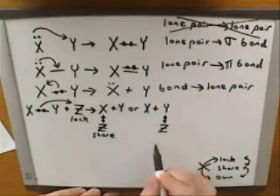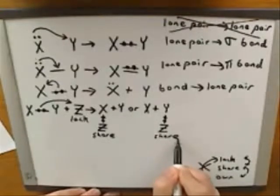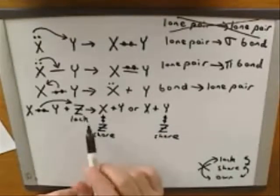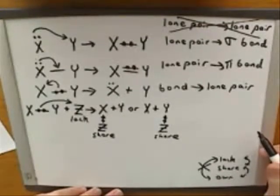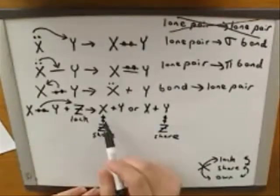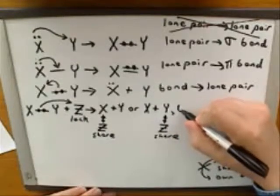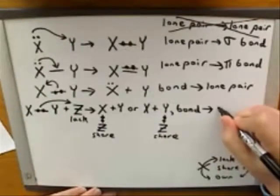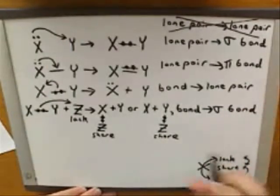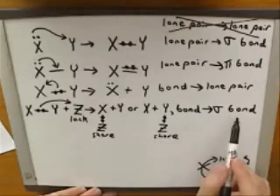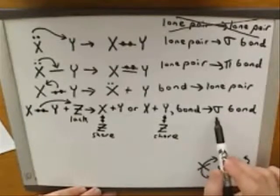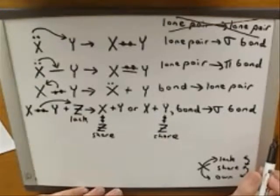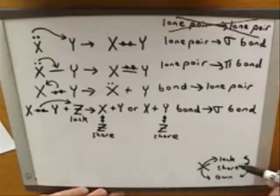Z is sharing that pair of electrons in the bond with X, or Z is sharing the pair of electrons in a bond with Y. So Z has gone from lacking the pair of electrons to sharing them — that's an allowed transition. We've now seen a new fourth type of allowed transition: the electrons are going from a bond to a new sigma bond. The electrons are taken out of one bond and used to form a new sigma bond — you can think of a sigma bond as a single bond.